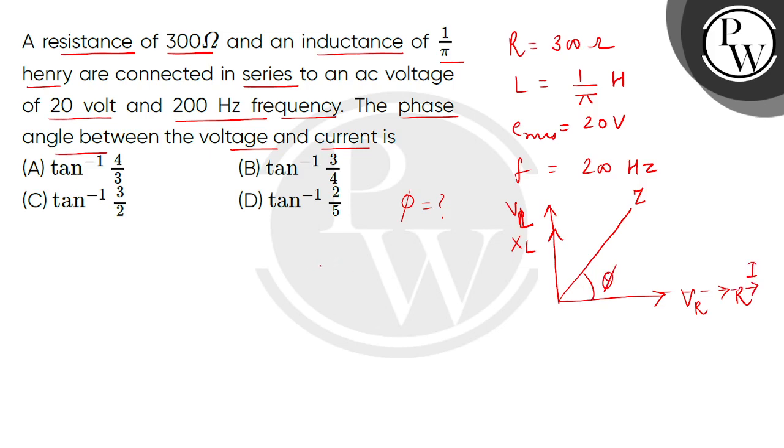So children, now we can see here that if we need the phase angle, which we call tan phi, this will be equal to XL divided by R, because tan ratio is the opposite side divided by the adjacent side.